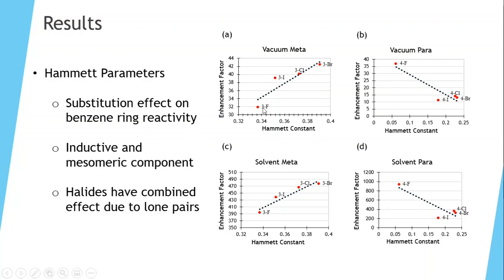Looking at these graphs here, we can see that for meta substitutions, there is a direct correlation between the enhancement factor and the Hammett constant, and for para substitutions, the effect switches, and it is a decrease. But in both instances, there is a very strong correlation between these two properties.